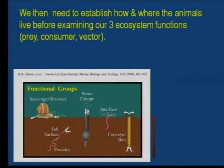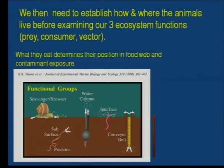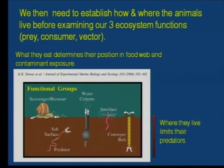The benthic community both can affect the function and reflects the function of the ecosystem. If the ecosystem is changing, the species you'll find in the benthic community will change, but they can also affect how the system operates. To do that we need to start with who's there. We do the sorting in-house, have a consultant do the taxonomy, then come up with their functional feeding group — which determines where they get their food from and their potential for contaminant loading.